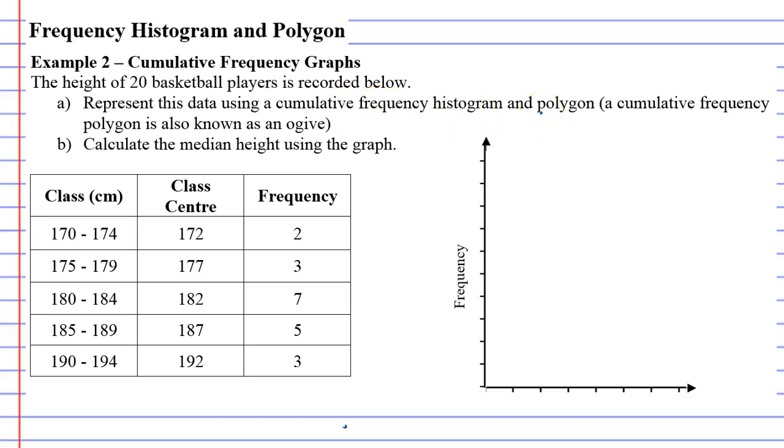And just a little side note, a cumulative frequency polygon is also known as an ogive. And an ogive is something that is very useful when you want to calculate median, which is what question B is about.